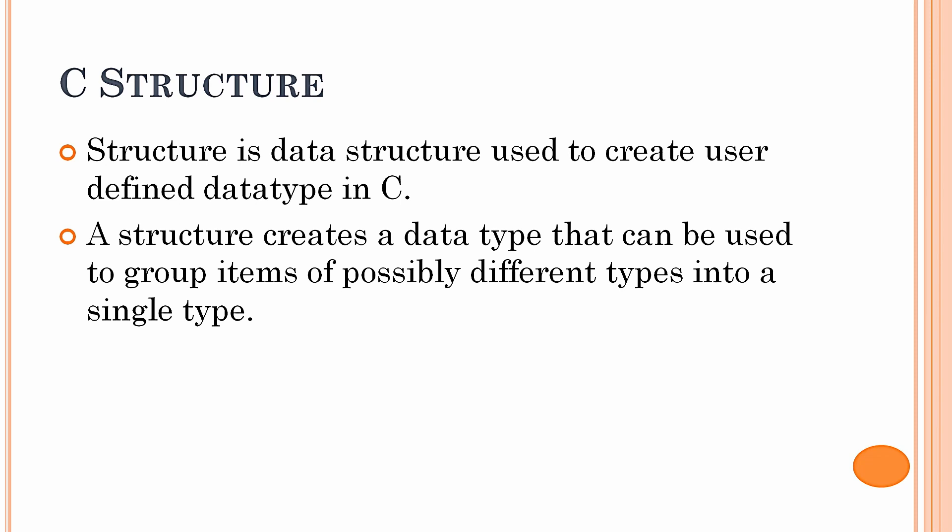A structure creates a data type that can be used to group items of possibly different types into a single type. It is used as a particular data type which can be a combination of elements of various data types like char, int, float, etc., all useful for a single application.